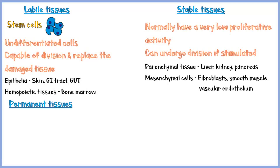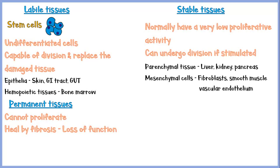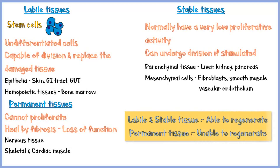Permanent tissues have left the cell cycle and cannot proliferate to produce new cells. So if these tissues are damaged, healing occurs by fibrosis, also known as scar tissue formation, and this will lead to loss of function of the affected area. These tissues include nervous tissue and skeletal and cardiac muscle tissue. In summary, both labile and stable tissues are capable of regeneration, while permanent tissues are not.